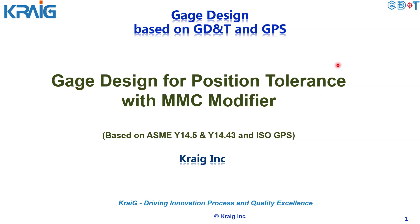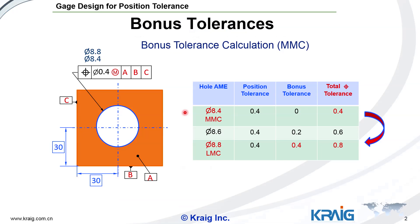Welcome to gauge design. In this video I'm going to show you how to design a gauge for position tolerance with MMC modifier. Let's look at the joint first. In the previous module we learned that the MMC modifier is used in position tolerance — for example, in this joint there's a position tolerance of 0.4 with MMC modifier based on datum A, B, C, and A, B, C are three surfaces.